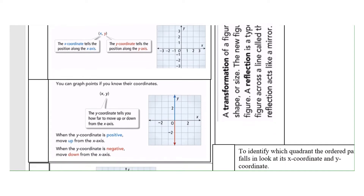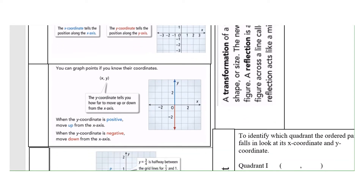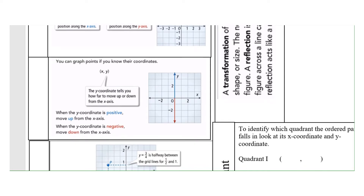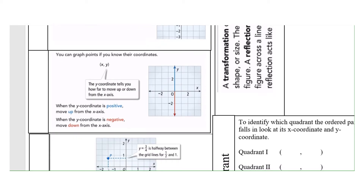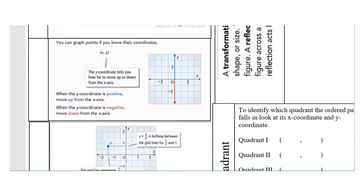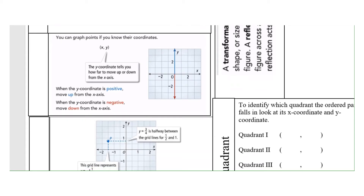You can graph points if you know the coordinates. You need two coordinates to graph a point because a coordinate plane is made up of two intersecting lines — you need two numbers to tell you the location. Think of coordinates like an address: it tells the mail carrier the location of your house. This is a coordinate on a two-dimensional plane.